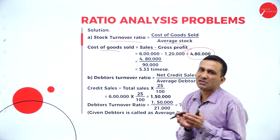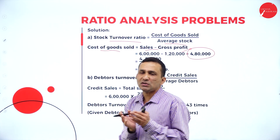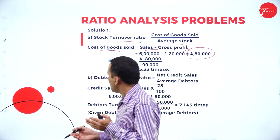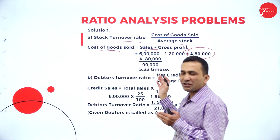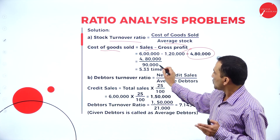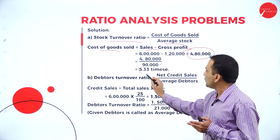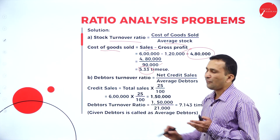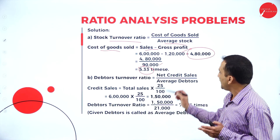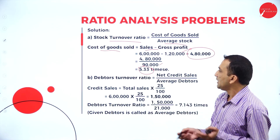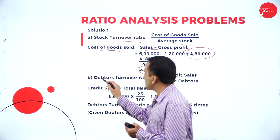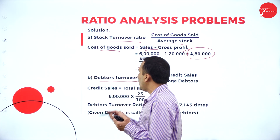According to the formula: cost of goods sold 4,80,000, and average stock — only closing stock is given in the balance sheet assets side as 90,000. Simplifying, we get 5.33 times.